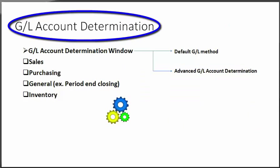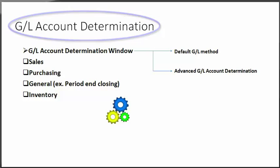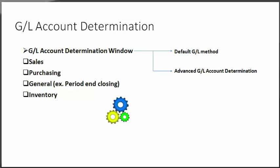The GL account determination window can be linked with two headings: default GL methods and advanced GL account determination. First, let us review how accounts are determined for items used in business processes. When you first implement SAP Business One, you define GL accounts to be used when transactions are created during the different business processes such as sales, purchasing, and inventory.